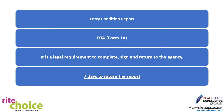The Form 1a is the entry condition report. It is a legal requirement for you to complete, sign, and return the Form 1a to our agency within seven days of taking possession. You are given a copy of this form, completed and signed by our agency, on or before the day you take possession — usually the day you collect the keys. If you have any questions or concerns during your seven-day period, please contact our property manager before returning the report within the legislated timeframe.